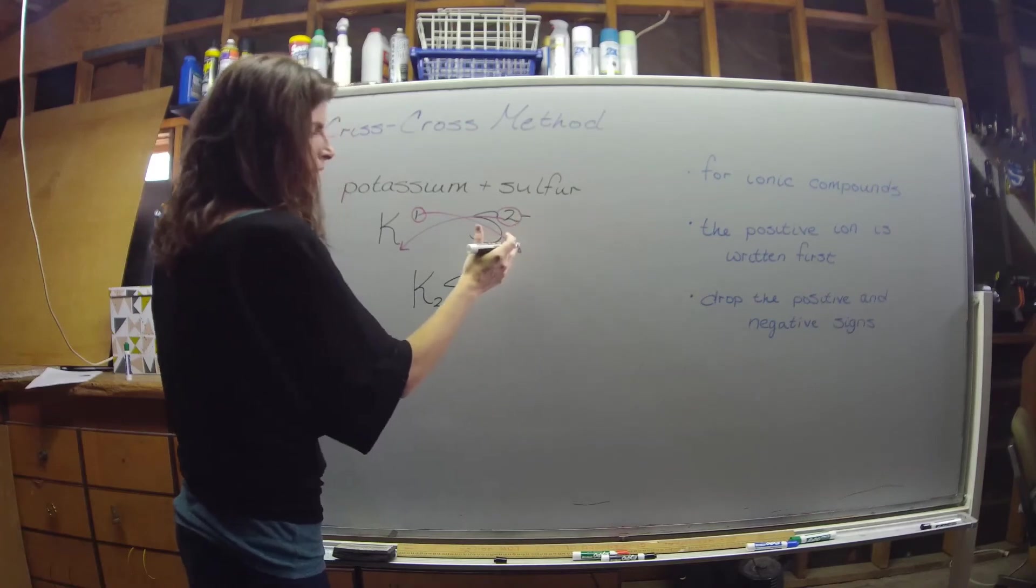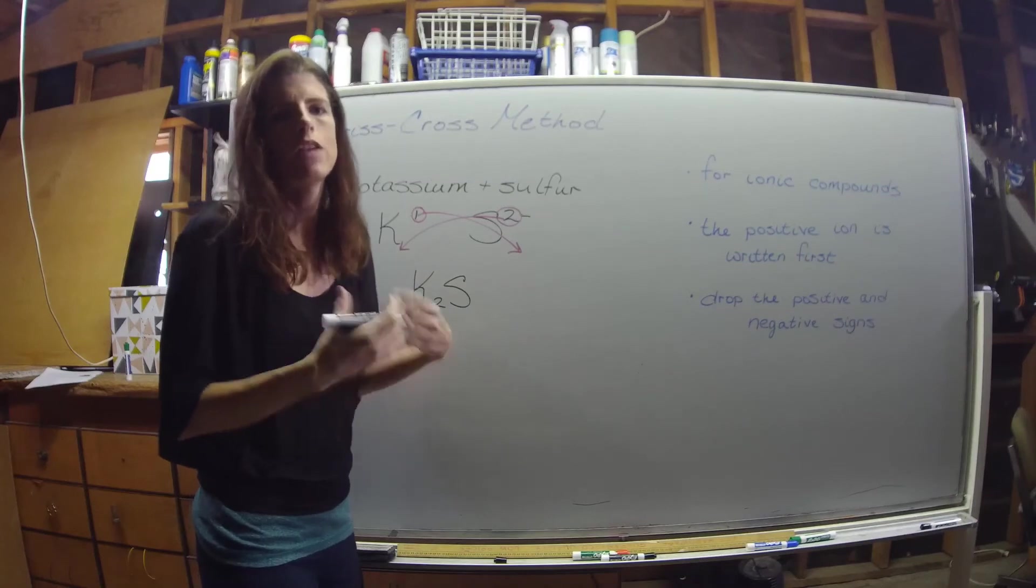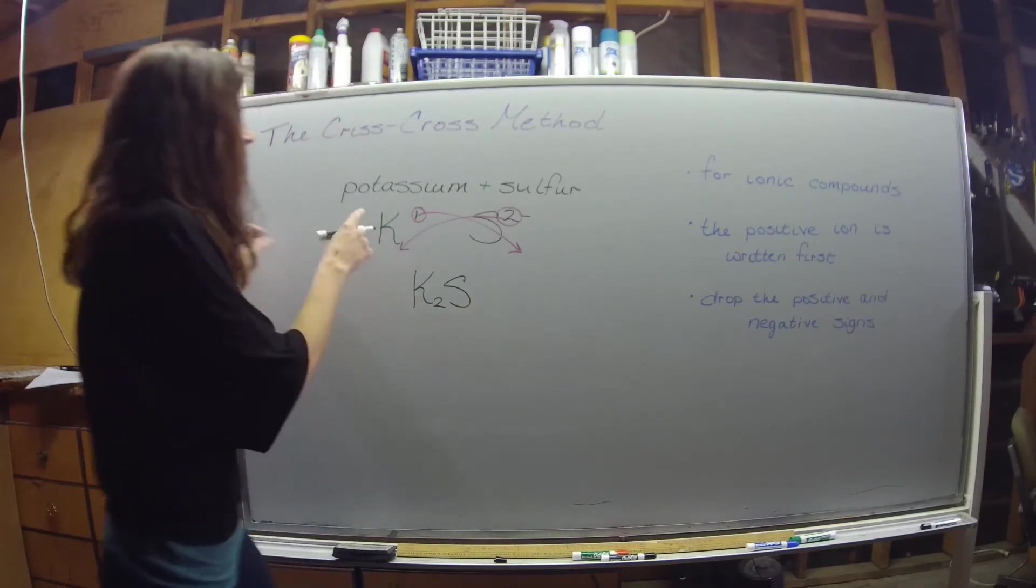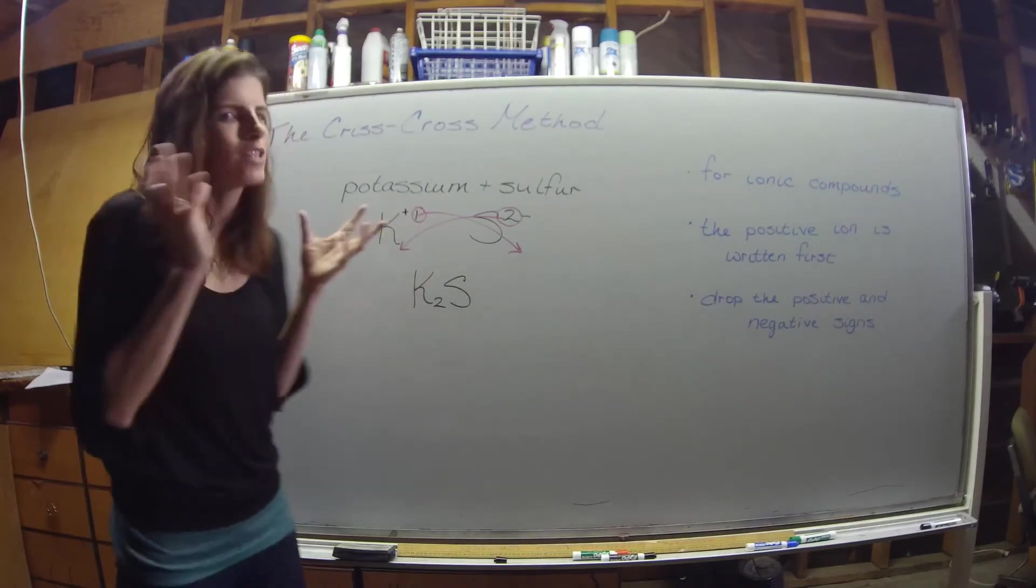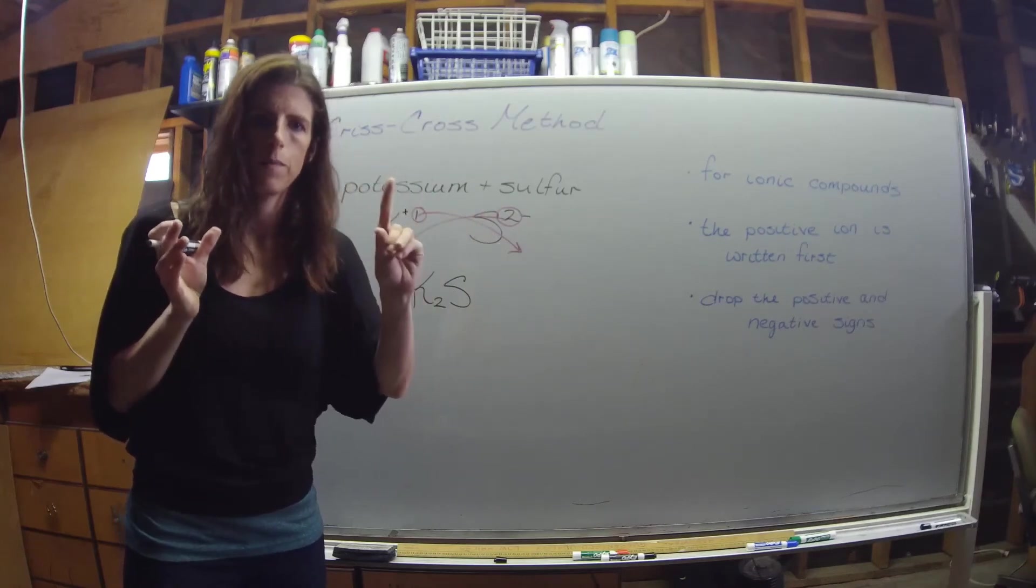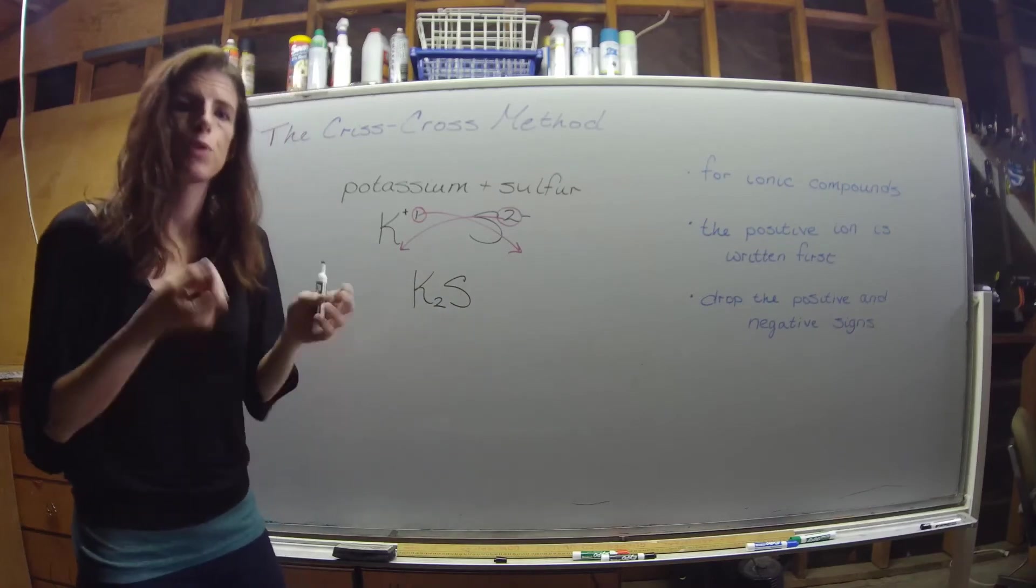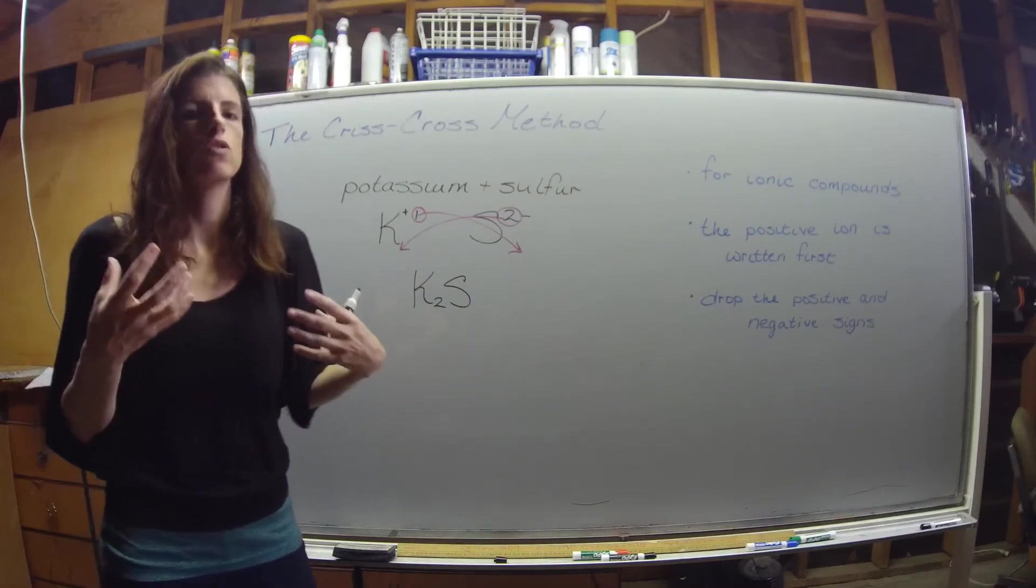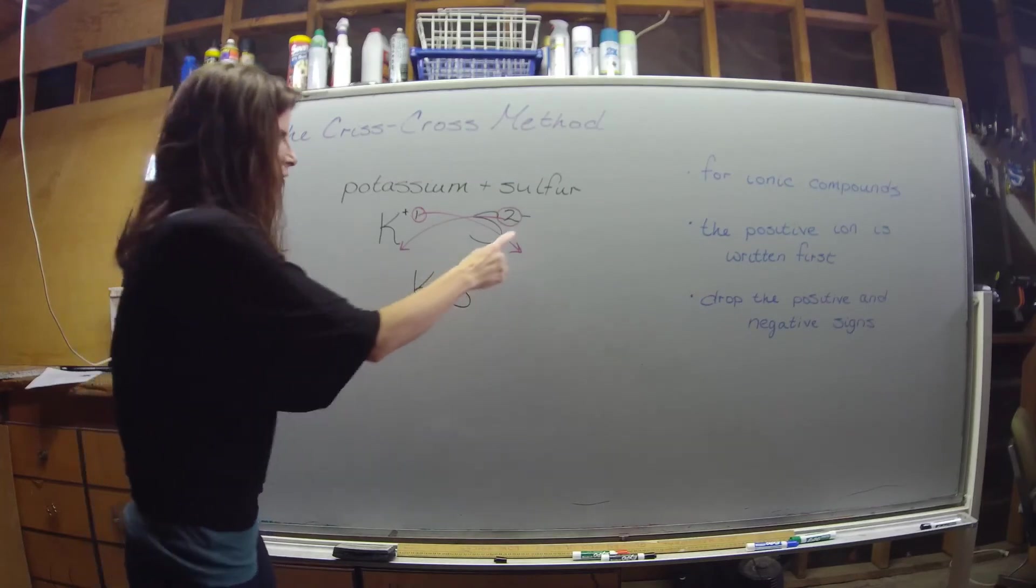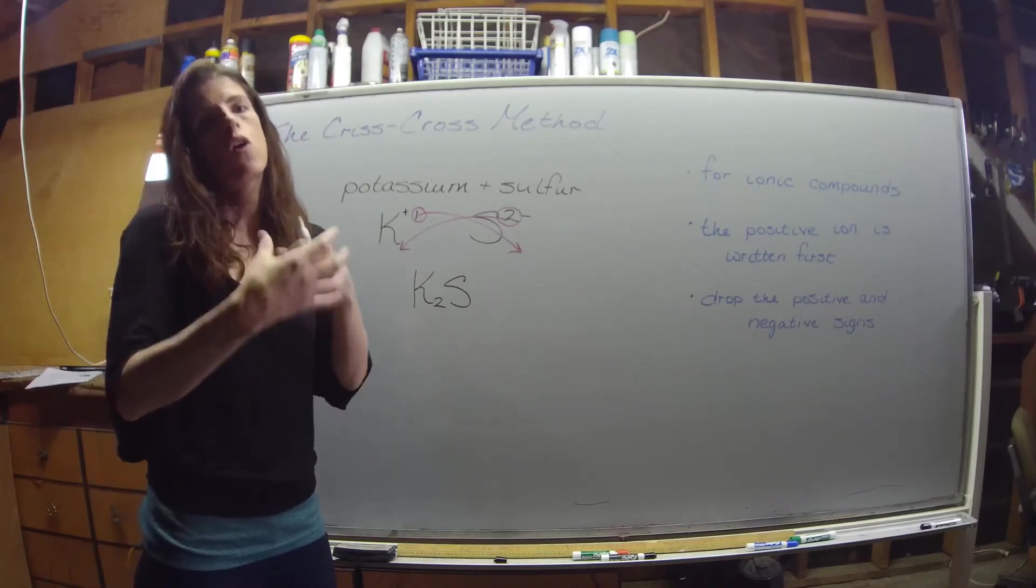The question is why are you doing that? Sulfur is 2-, sulfur wants to gain two more electrons so it can look like that noble gas and have eight valence electrons. Potassium only has one valence electron, it's looking to lose that one valence electron but it only has one. So sulfur needs to hook up with two potassium atoms in order to satisfy itself - one wouldn't be enough, it wouldn't neutralize things. But if a 2- hooks up with two +1s then we form a neutral ionic compound.